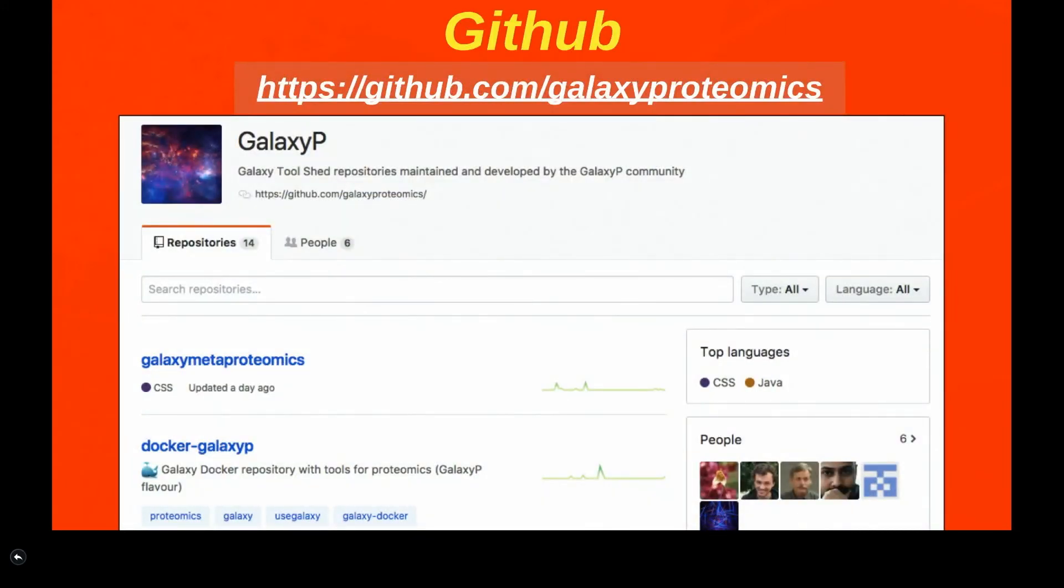Lastly, the Galaxy for Proteomics GitHub site has information and tool recipes for tools that are being developed, along with other tools that have already been made available through Toolshed.